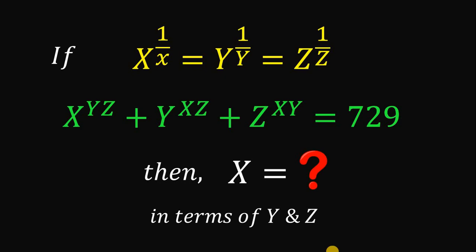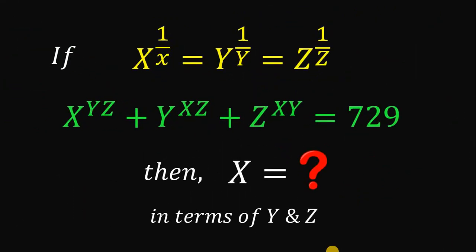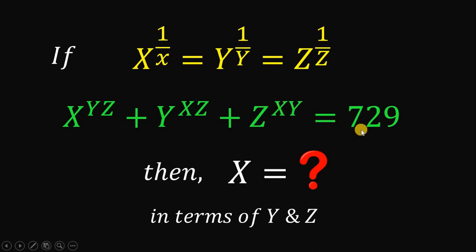Good day everyone. Today we will answer this algebra challenge. The question goes like this: if x raised to 1 over x equals y raised to 1 over y equals z raised to 1 over z, and x raised to yz plus y raised to xz plus z raised to xy equals 729, then what is the value of x in terms of y and z?